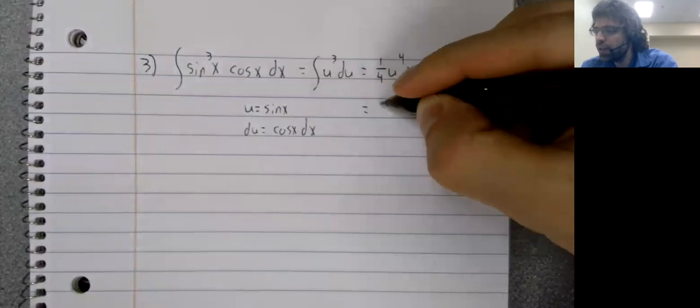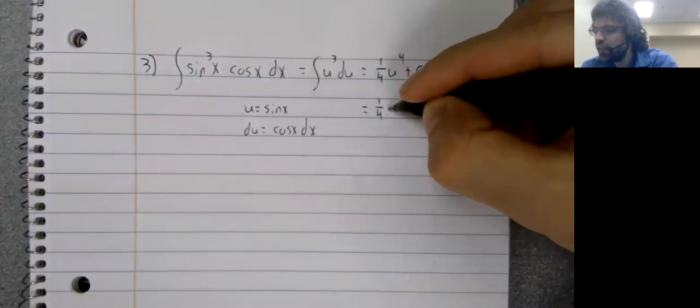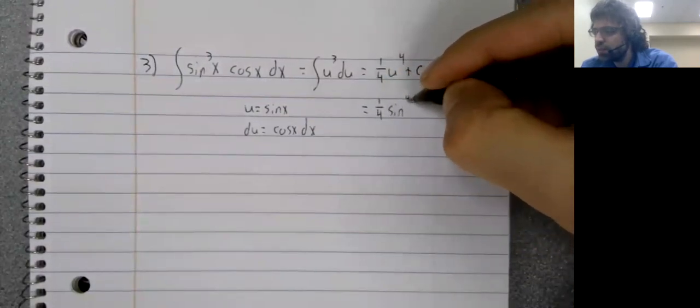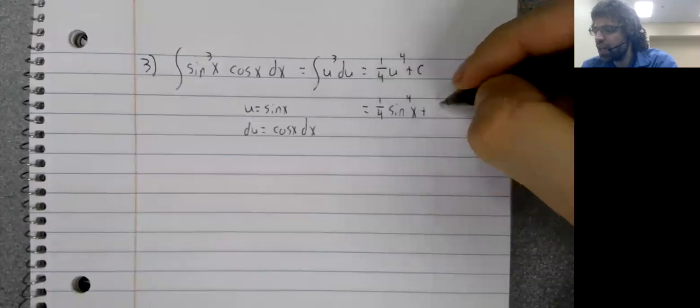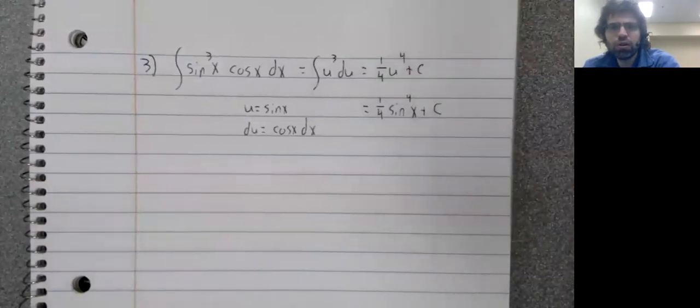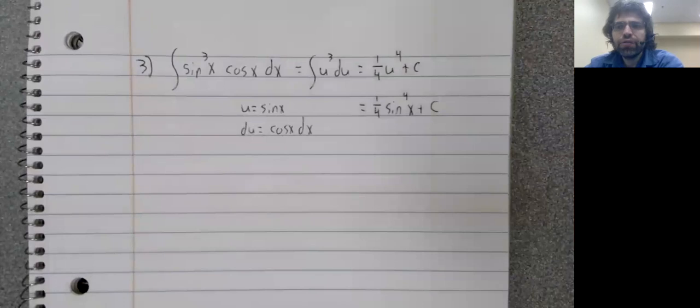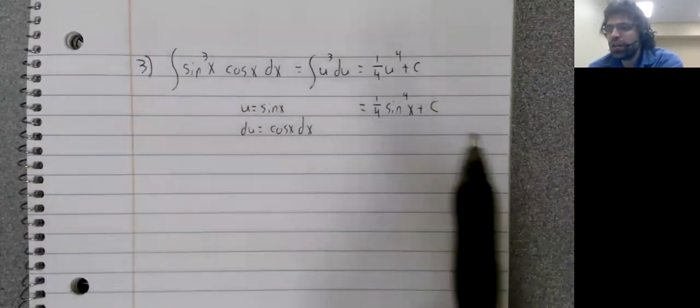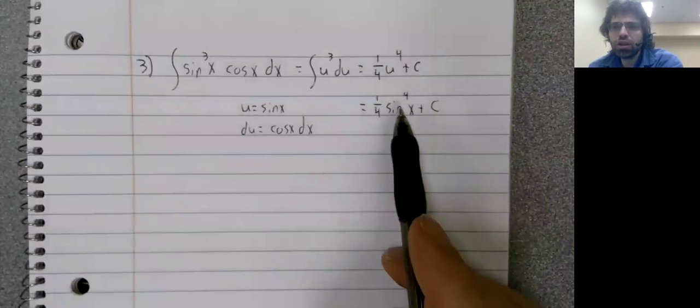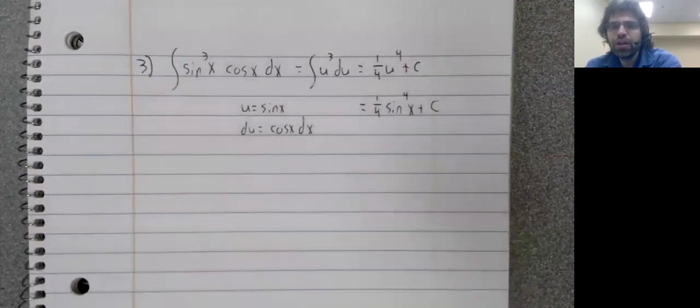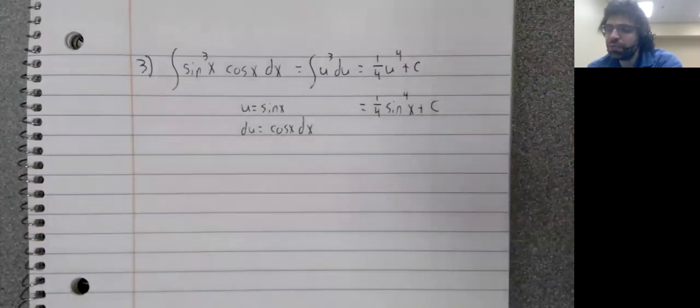U is the sine. So we've got the sine to the fourth. If you went ahead and used the techniques of section 8.2, the answer you wind up with will not look like this, but it will be the same, except maybe the constant is different.